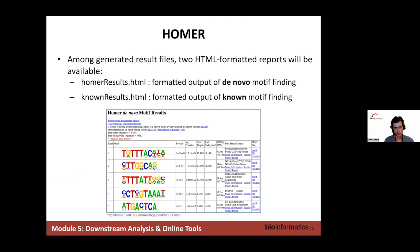Two reports will be generated: one on de novo motifs found, and the other on known motifs that already exist in Homer's database.